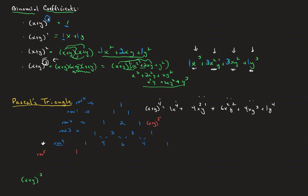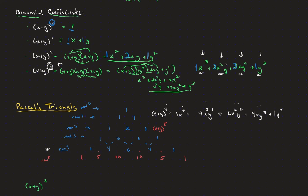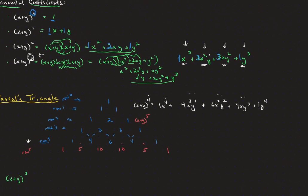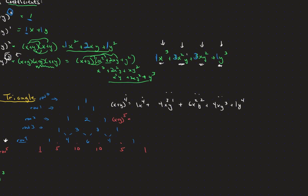Let's do row five. Starting with 1, you get in the gap and add: between 1 and 4 is 5, between 4 and 6 is 10, between 6 and 4 is 10, between 4 and 1 is 5, ending with 1. So the expansion of (x+y)^5 is x^5 + 5x^4y + 10x^3y^2 + 10x^2y^3 + 5xy^4 + y^5. Notice the exponents in every term add to 5.